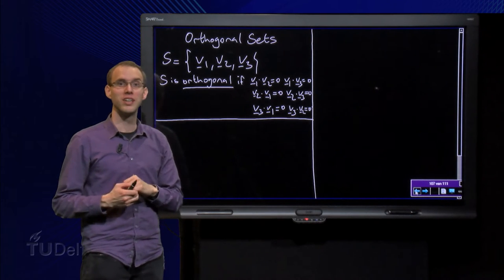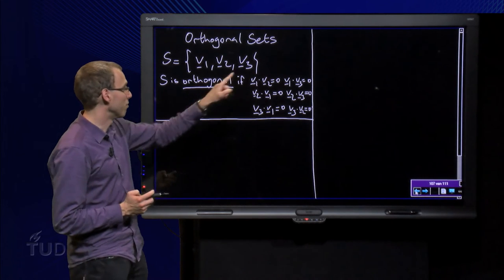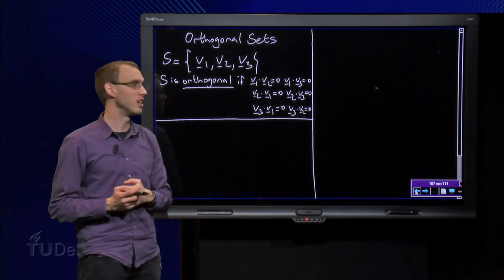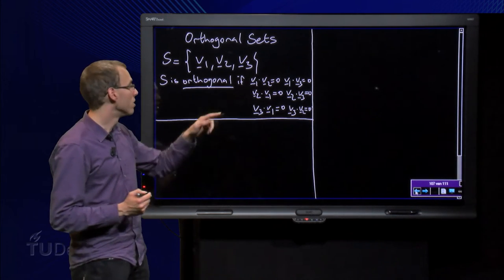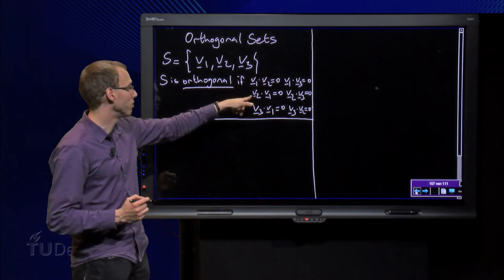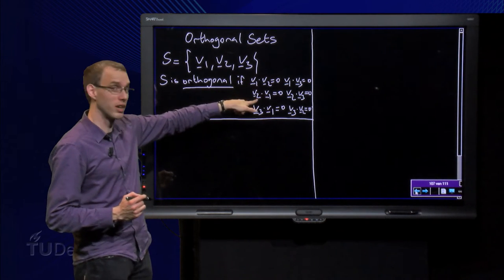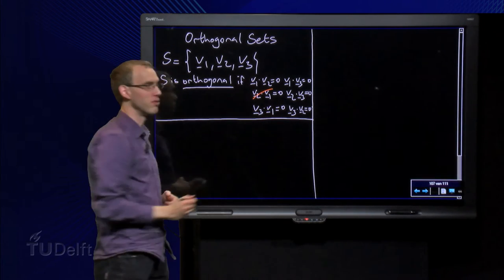But wait a minute, this real inner product is symmetric. That means that if V1 and V2 equals 0, we automatically know that V2 and V1 also equals 0. So if we want to check whether S is orthogonal or not, we do not have to check this one because this is already satisfied if that one is satisfied. So we can skip this one.